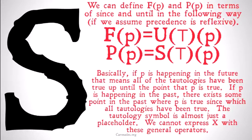PP is defined as: tautologies have been true since P was true. If P happened sometime in the past, there exists some point in the past where P is true such that since which all tautologies have been true. The tautology symbol — that kind of squared off T — is almost just a placeholder.